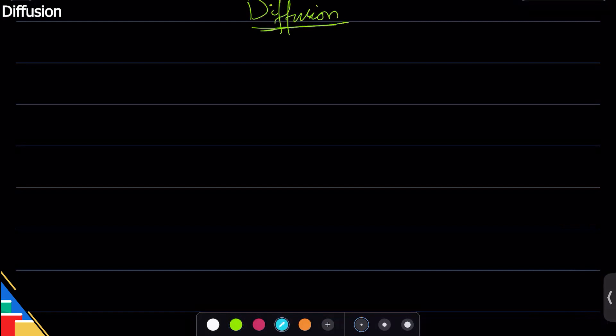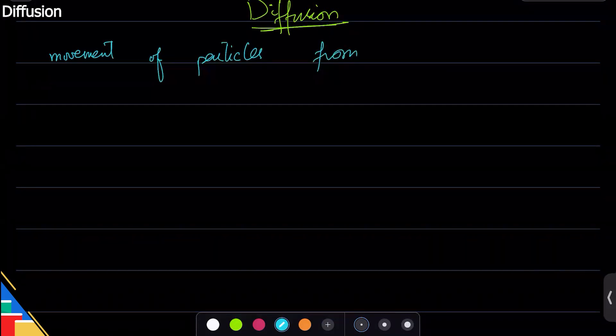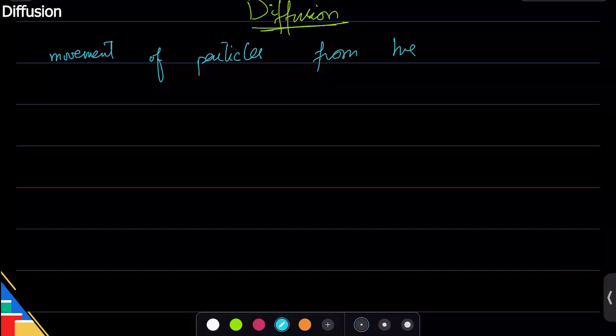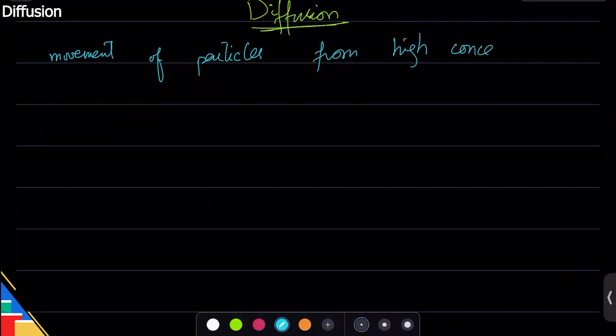So what is diffusion? Let's look at diffusion. It is movement of particles from where they are more to where they are less. Now there's a word to describe that. Instead of saying they are more, we say where they have high concentration. So they go from high concentration, which means they are more closer together, they are concentrated, to low concentration.